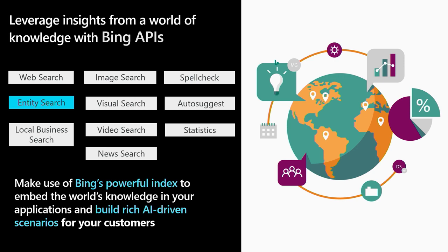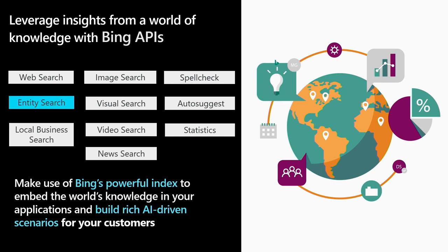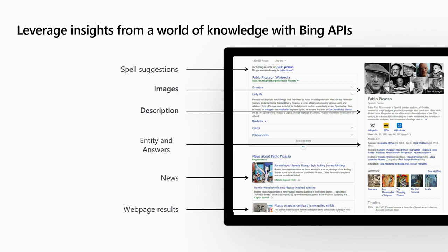The Bing entity search API knows how to get information about an artist — essentially the same as querying for Pablo Picasso on Bing. They created an API that exposes this information. So let me do a small demo. I want to introduce you to a solution accelerator I'm going to be using for some of our demos. One of the things Kavir and I said when putting together the presentation is: every demo we do, we'll put it in GitHub.